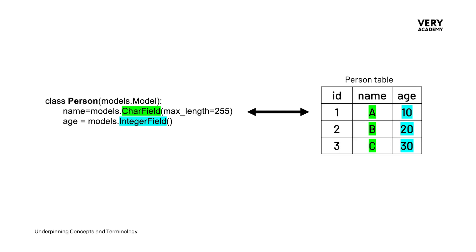If you come to this completely new to migrations, simply put, in Django we build Django models. Those models will be migrated through the Django migration system and then translated into a table in our database. The migration system will then help us synchronise any changes we make to our model with our actual database tables.